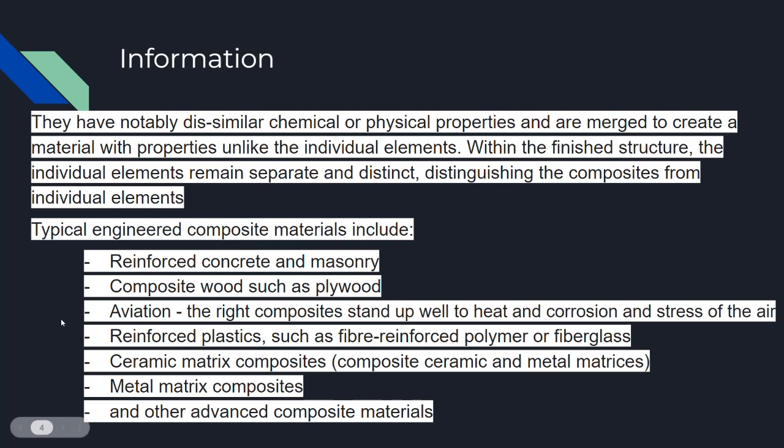Right now, aviation is the heavy leader in research about composite materials, because for aviation we need to find the right composites that can withstand heat, stresses, air resistance, and corrosion. There are also refined plastics such as fiberglass polymers, chemical matrix composites, ceramic matrix composites, metal matrix composites, and other advanced composite materials. Advanced composite materials are usually used for aviation because aviation is the main driver behind composite research.